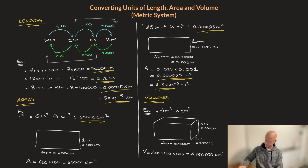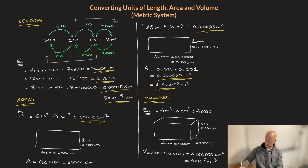Because this is a large number, we could write this in standard form. Counting the digits after the first one, there are 6 digits after the 4. So in standard form, this would be 4 times 10 to the power of 6 cubic centimeters. We can now conclude that 4 cubic meters is 4 million cubic centimeters.